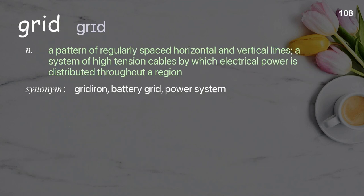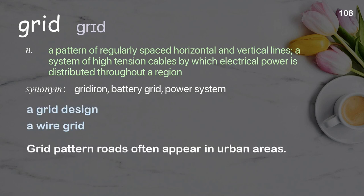Grid: A pattern of regularly spaced horizontal and vertical lines; a system of high-tension cables by which electrical power is distributed throughout a region. Examples: a grid design, a wire grid. Grid pattern roads often appear in urban areas.